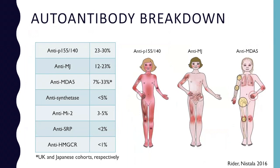These autoantibodies also occur in different percentages. Anti-P155-140 is the most common, found in about 23 to 30% of juvenile patients. Anti-MJ is the second most common, at 12 to 23% of kids. Anti-MDA5 is the third most common, with a wide range of 7 to 33% — because it varies geographically. The 7% figure comes from US and European studies, whereas 33% comes from Japanese studies. So it's much less common in the Western hemisphere, but still more common than other autoantibodies like antisynthetase, anti-MI2, SRP, and HMGCR.